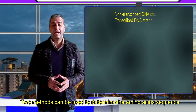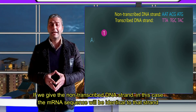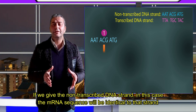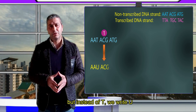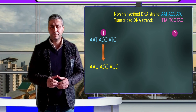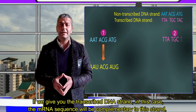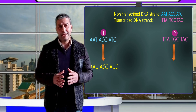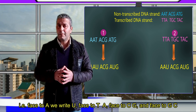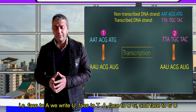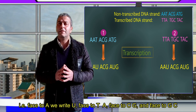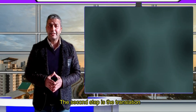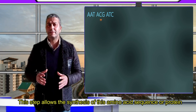If we give you the non-transcribed DNA strand, in this case the mRNA sequence will be identical to that strand but instead of T we write U. If we give you the transcribed DNA strand, in this case the mRNA sequence will be complementary to that strand — that's to say: facing A we write U, facing T we write A, facing C we write G, and facing G we write C.